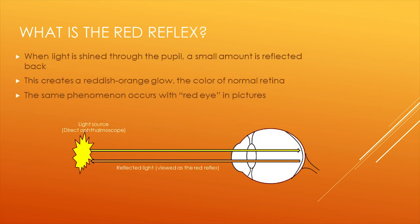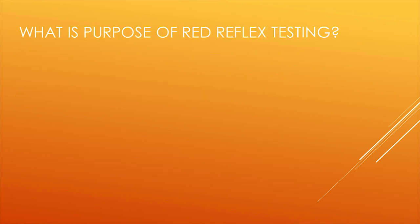The red reflex is a reflective phenomenon seen when light passes through the pupil and is reflected back off of the retina to a viewing aperture, creating a reddish-orange glow. You may notice this commonly in pictures with flash. Red reflex testing is a valuable tool for detection of abnormalities in the normally transparent visual axis or in the retina.